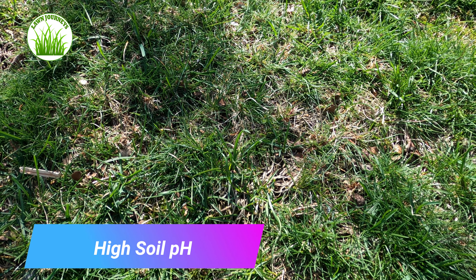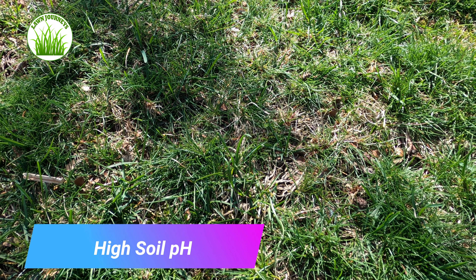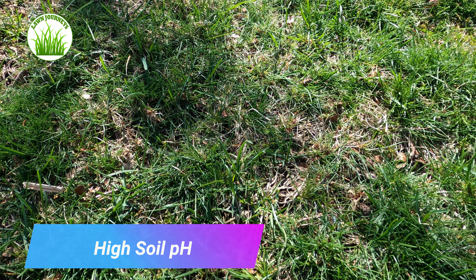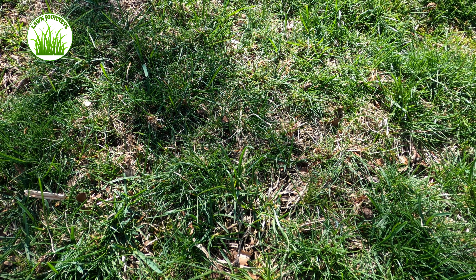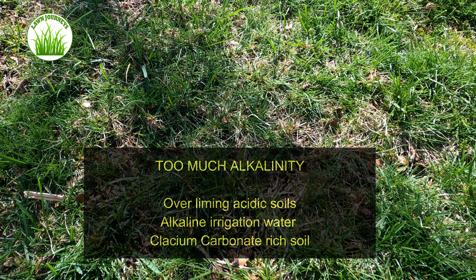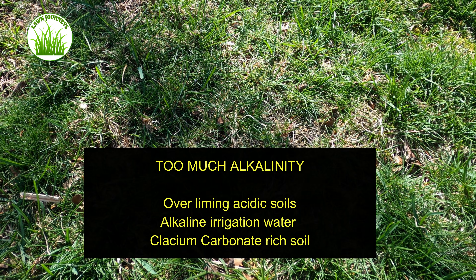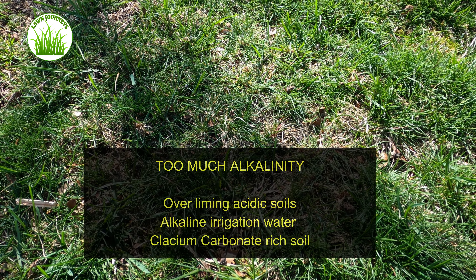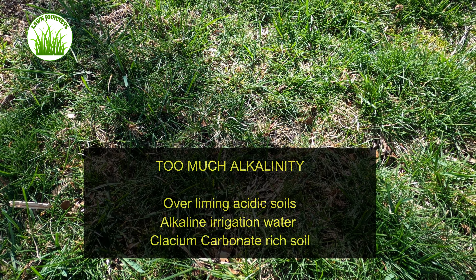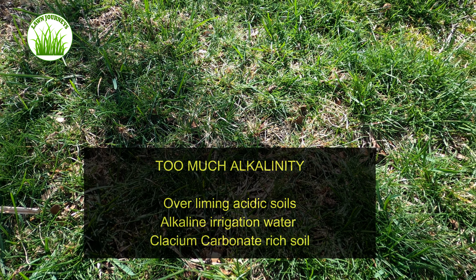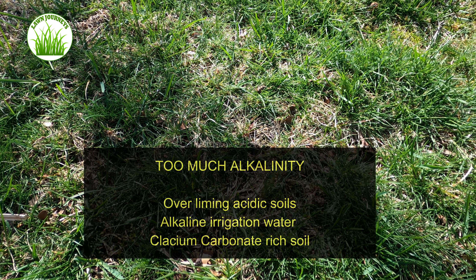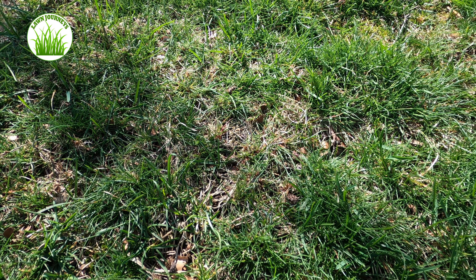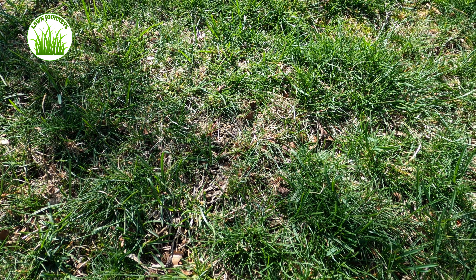What happens when soil pH is too high? In general, some nutrients cannot be efficiently absorbed by plant roots. High soil pH is generally the result of over-liming acidic soils. It could also be from alkaline irrigation waters, or calcium carbonate-rich soil.